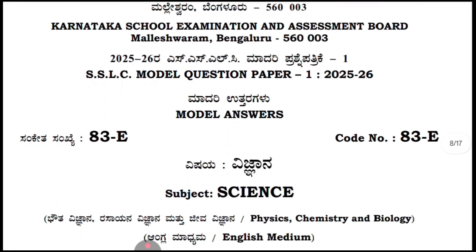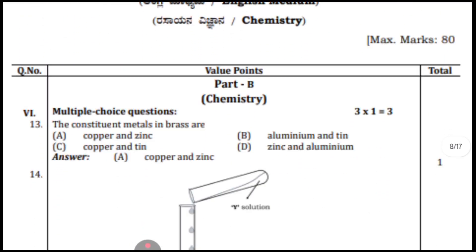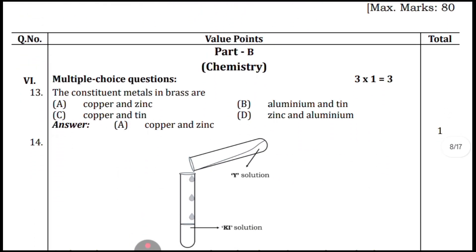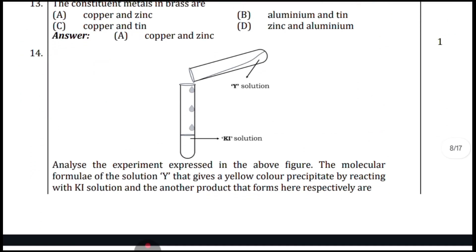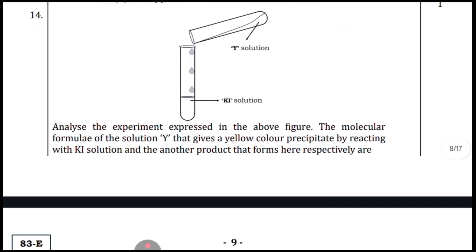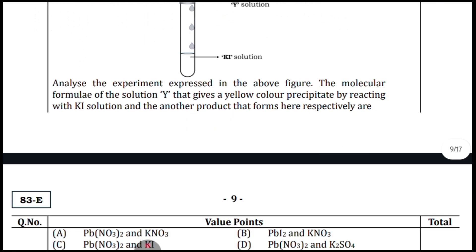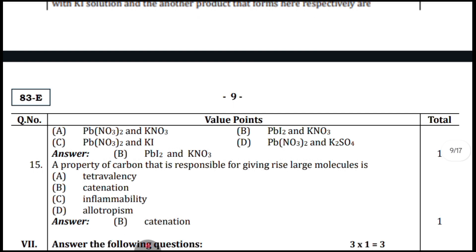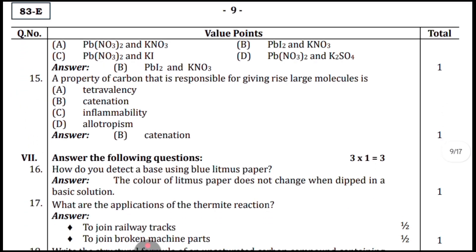Coming to the chemistry section: the constituent metals in brass are copper and zinc. Question fourteen: after observing the diagram, option B is correct — PbI₂ and KNO₃. A property of carbon responsible for giving rise to large molecules is catenation.